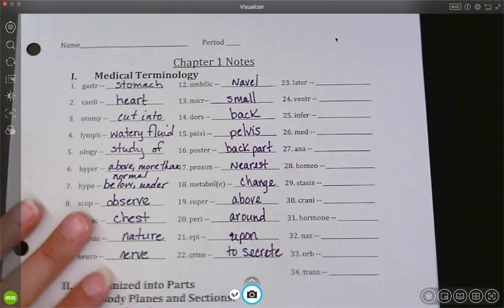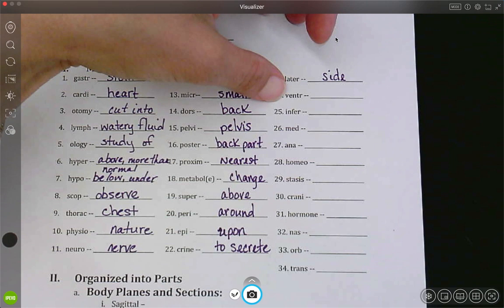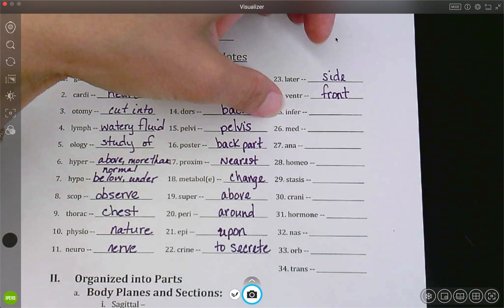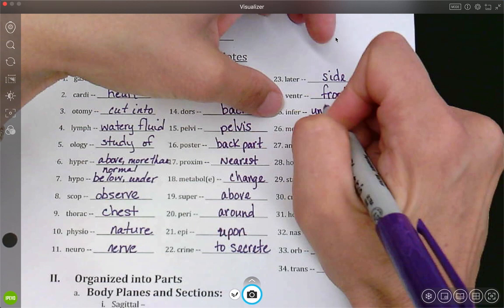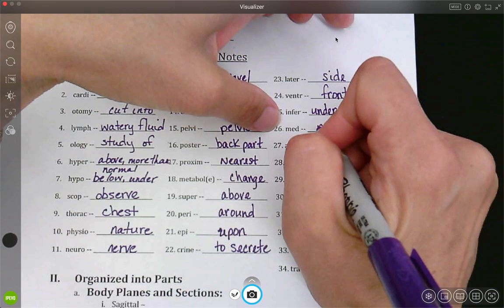Let's move and look at the last part. Later, later is side. So lateral is on the side. My ears are lateral, my arms are lateral. Ventral, ventra is front. Ventral is the front. Inferior. Someone is inferior to me, they are under or beneath. Mead, middle.